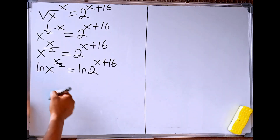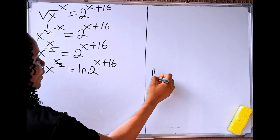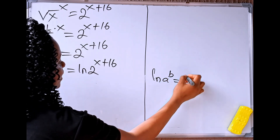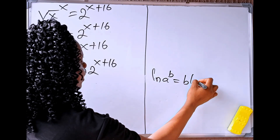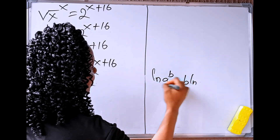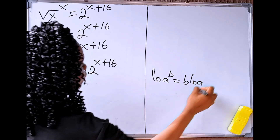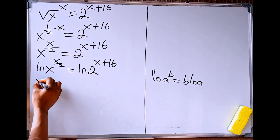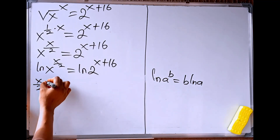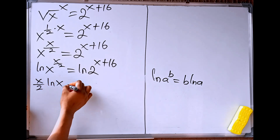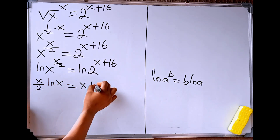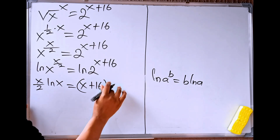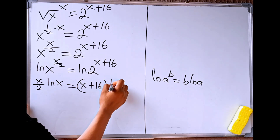From here, we are going to apply this natural log rule that says if we have log of a to the power of b, this equals b times ln of a. If we apply this rule here, we are going to have that x divided by 2 times ln of x equals x plus 16 times ln of 2.